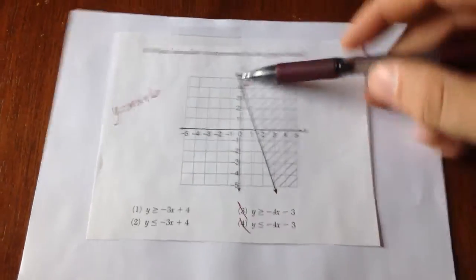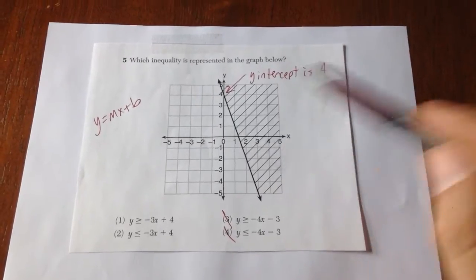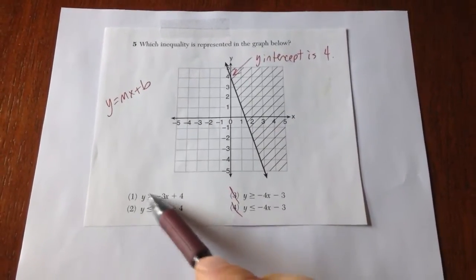Now this is an inequality graph and it's being shaded above the line, so I'm going to pick the one that says greater than.